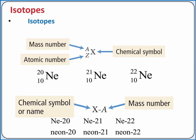The second method lists the chemical symbol, then a dash, then the mass number.